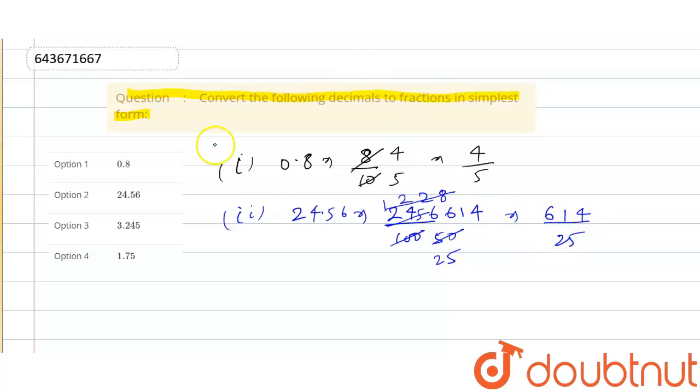For the third part, 3.245, we can write it as 3245 by 1000. If we divide by 5, we get 649 by 200. So our fraction form is 649 by 200.